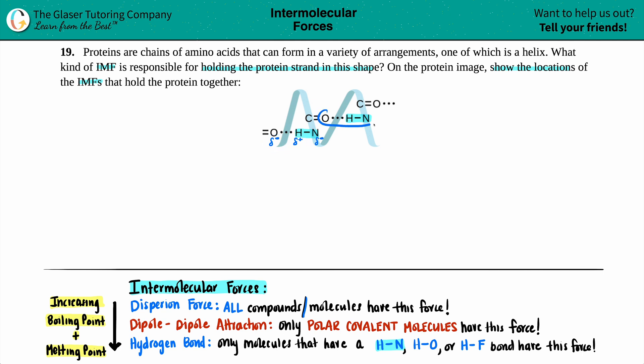And the same idea goes on here. Nitrogen is the negative that makes the hydrogen partial positive, and it's making an attraction with the oxygen who is partial negative.